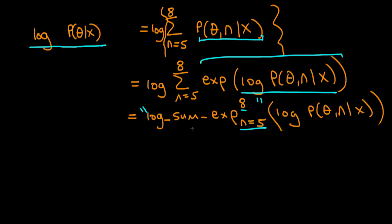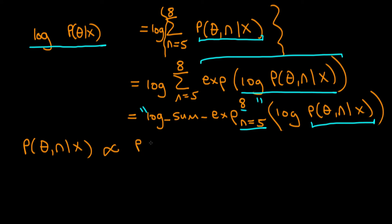There is a particular numerically stable mathematical operation called log-sum-exp, where we sum from n=5 to n=8 of log p(theta, n | x). This gives exactly the same result as the previous expression but is numerically stable — necessary because probabilities can be very small, and naively computing the above could cause numerical errors. Fortunately, Stan has this operation within its range of functions. However, we're still not done because we don't actually have the density p(theta, n | x) directly. We can use Bayes' rule: p(theta, n | x) is proportional to p(x | theta, n) times p(theta, n).